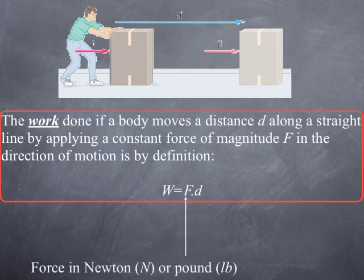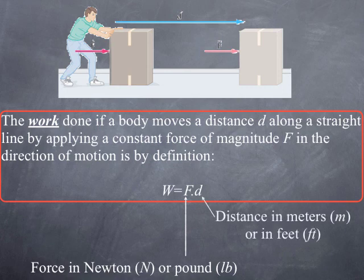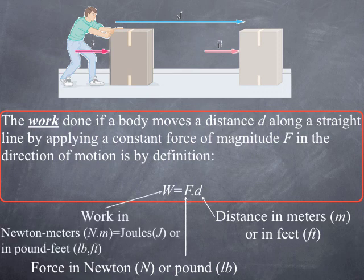The force is measured typically in newtons in the international system or in pounds in the American system. The distance is measured in meters in the international system or in feet in the American system. Therefore work is homogeneous to newton-meters, which itself is homogeneous to joules. If we measure the force in pounds and distance in feet, we get pound-feet.